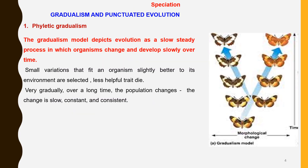Phyletic gradualism. According to this model, evolution is a slow, steady and gradual process. There are small variations that occur depending upon the environment. The less helpful traits die, but it happens over a very long period of time, as shown in the figure here, where the morphological changes occurring in the organism are so gradual and slow that they can hardly be distinguished over a short period of time.